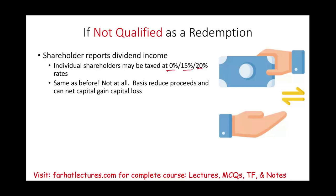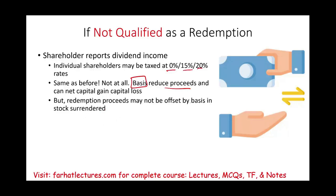Capital gains are taxed at the same rate as dividends — so why would you care whether it's a capital gain or a dividend? Two reasons: basis reduces the proceeds, and net capital gain can offset capital losses. You can offset gains with losses from other sources. But redemption proceeds treated as dividends may not be offset by basis in stocks surrendered — if it's called a dividend, you cannot offset capital losses.